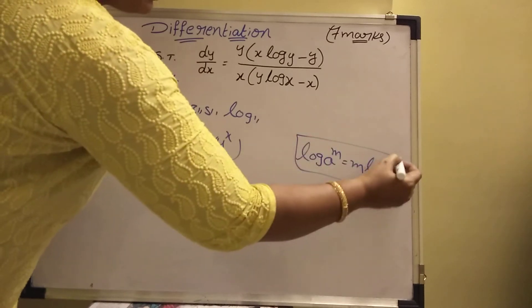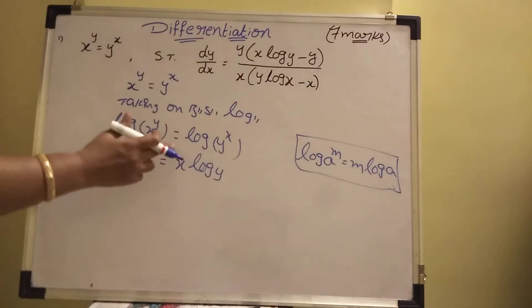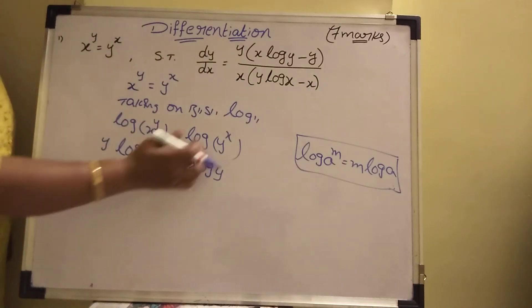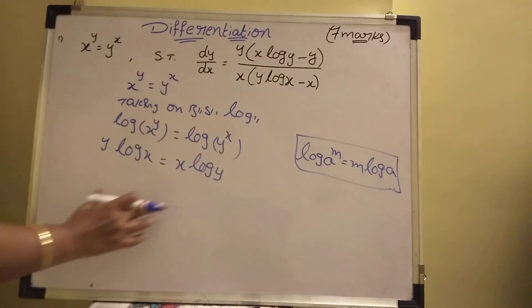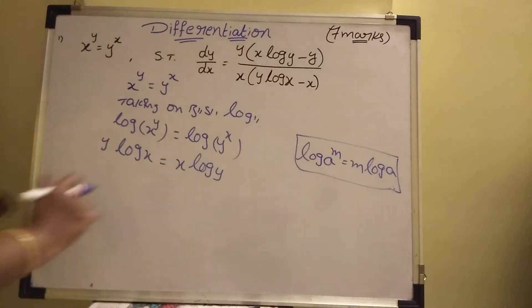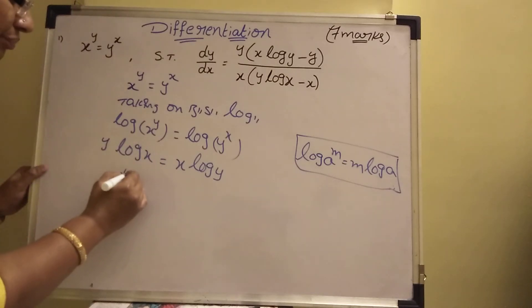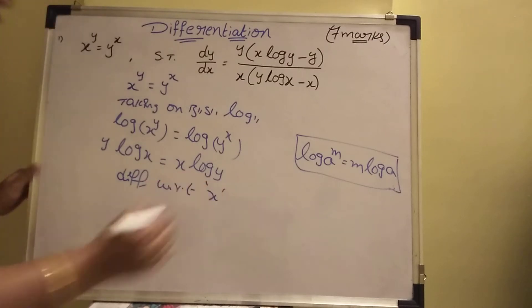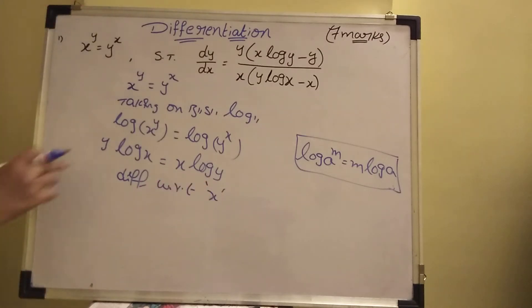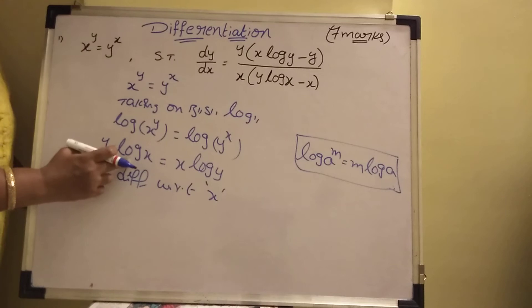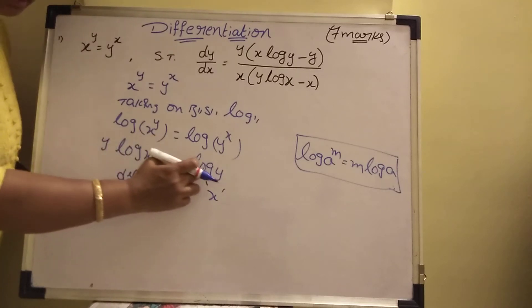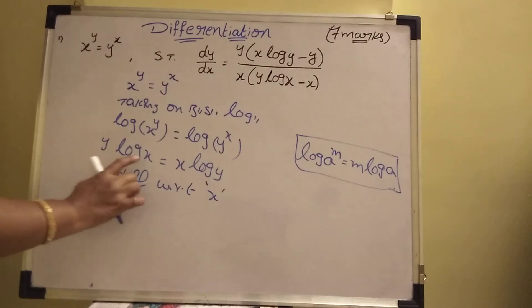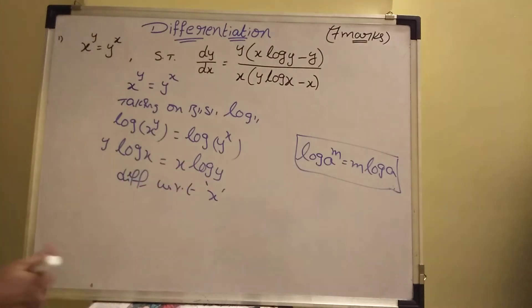Now do differentiation with respect to x. Here in y log x, two functions are there. Here also in x log y, two functions are there. That is why we use the derivative formula for uv: d by dx of uv.